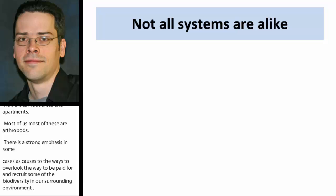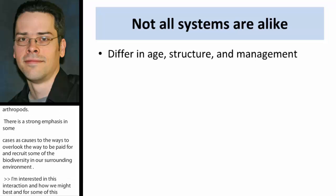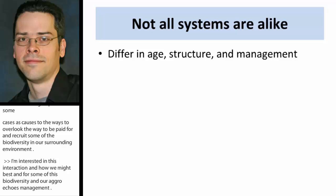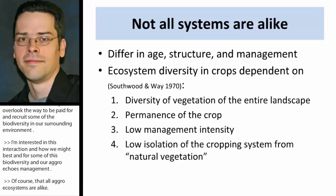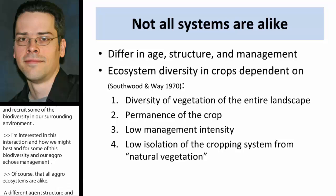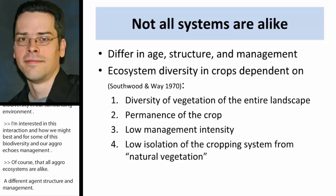Not all agroecosystems are alike. They differ in age, structure, and management. In cropping systems, there's been a concept around since the 1970s that has defined ecosystem diversity in crops. Southwood and Way defined four characteristics of ecosystem diversity in crops.